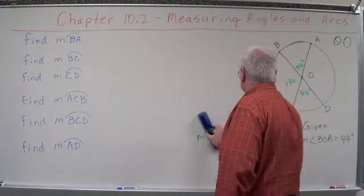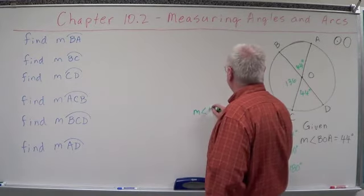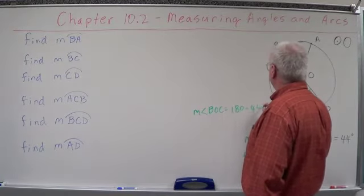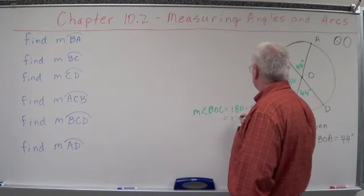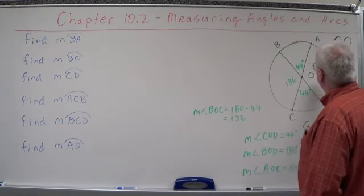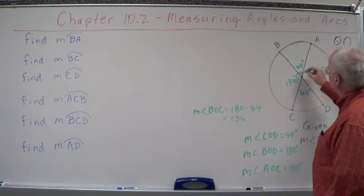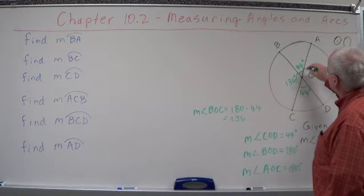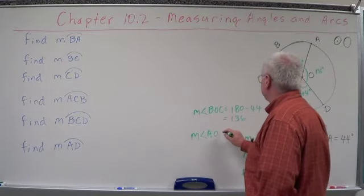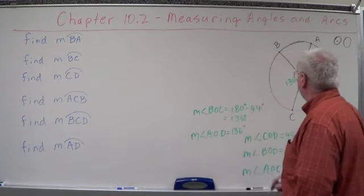So we can find out a lot of different things. Let's rewrite this so it makes a little more sense over here. Measure of angle BOC equals 180 minus 44 equals 136. And then we know this one over here also equals 136 degrees. Why? Because they're vertical angles. AOD equals 136. So those are all kinds of things that we know about this thing already.